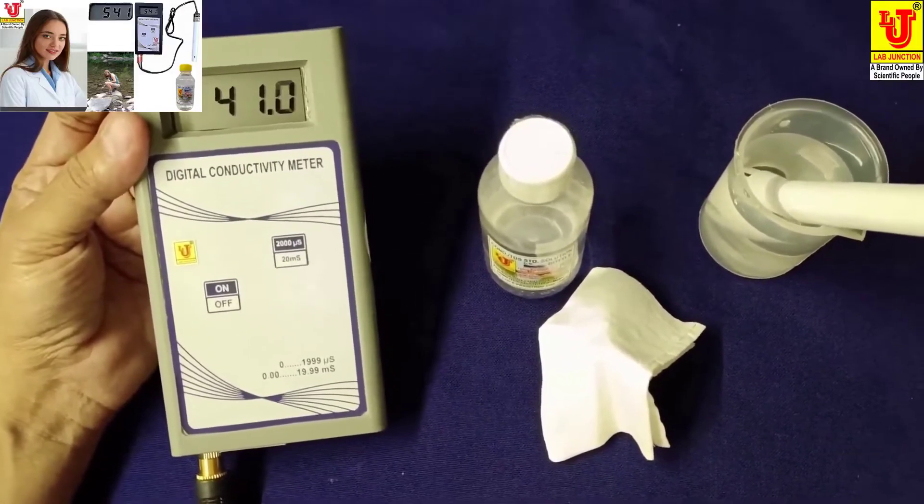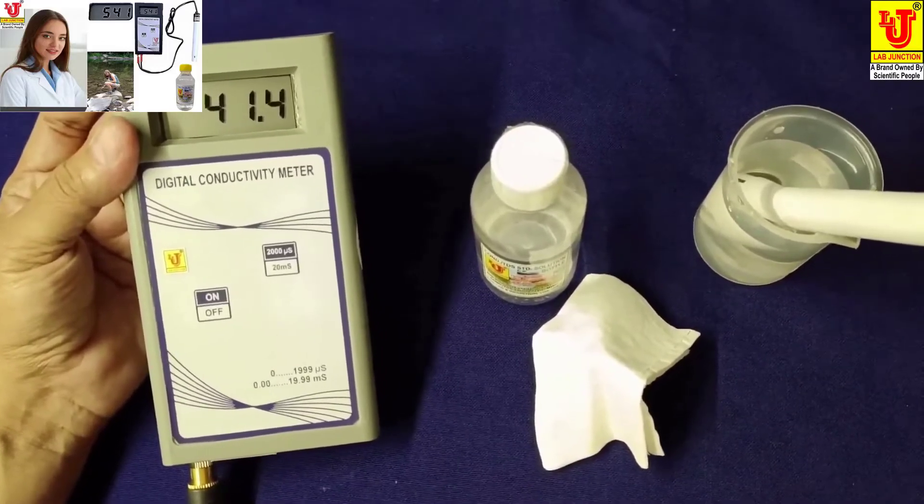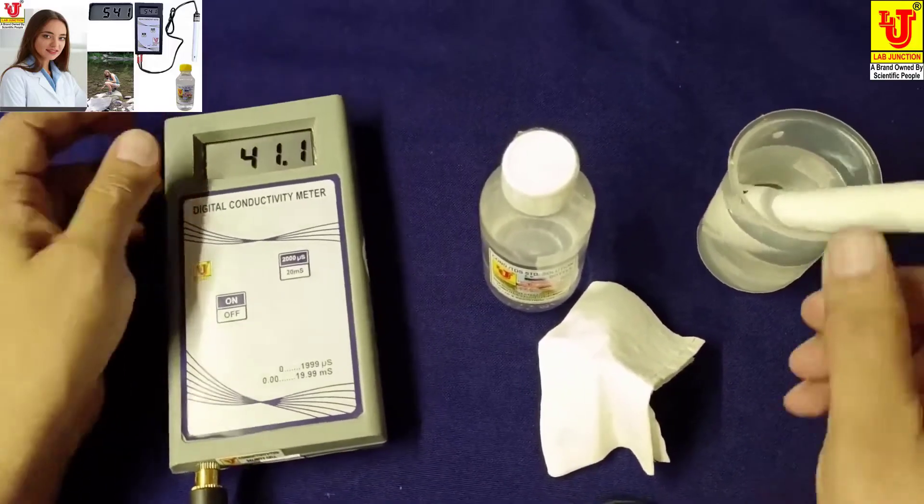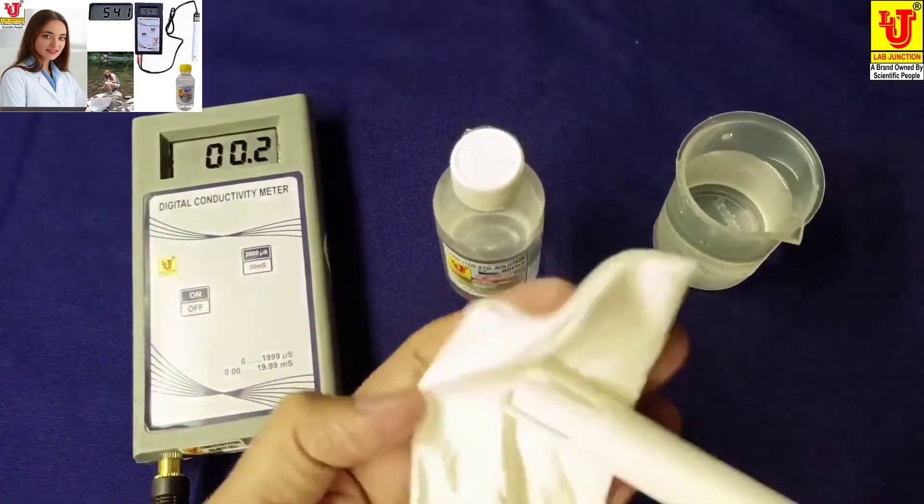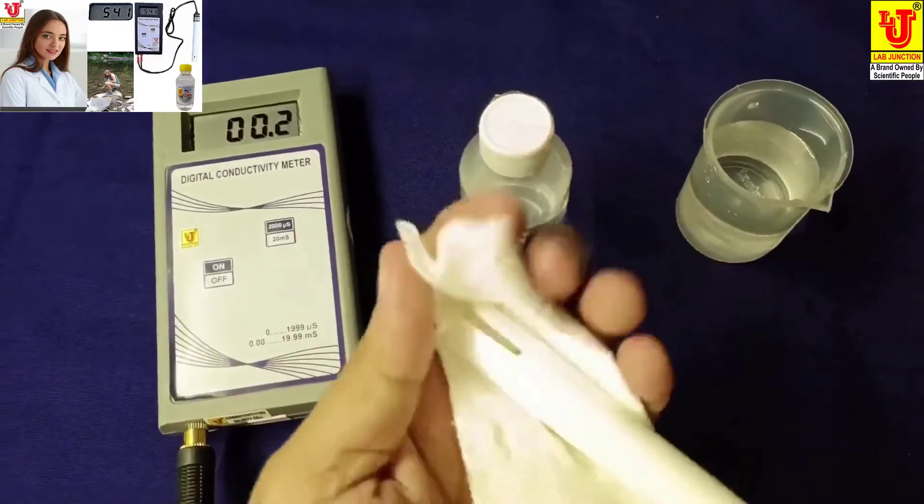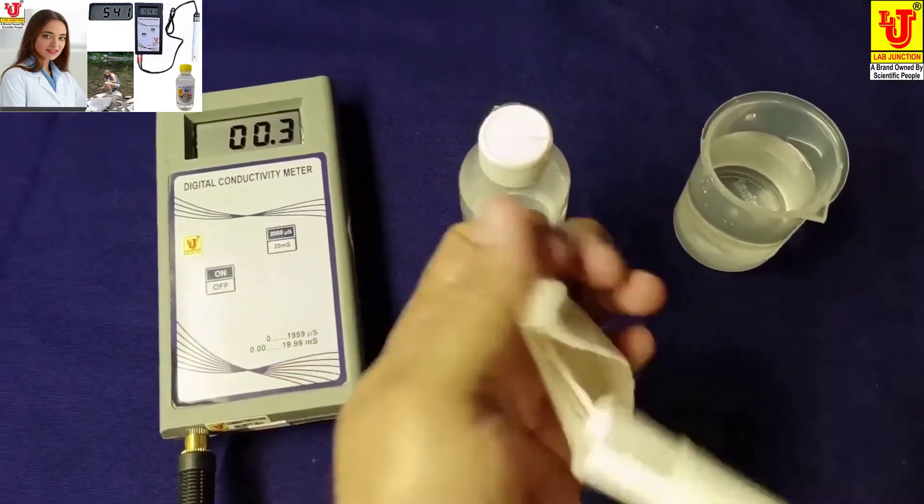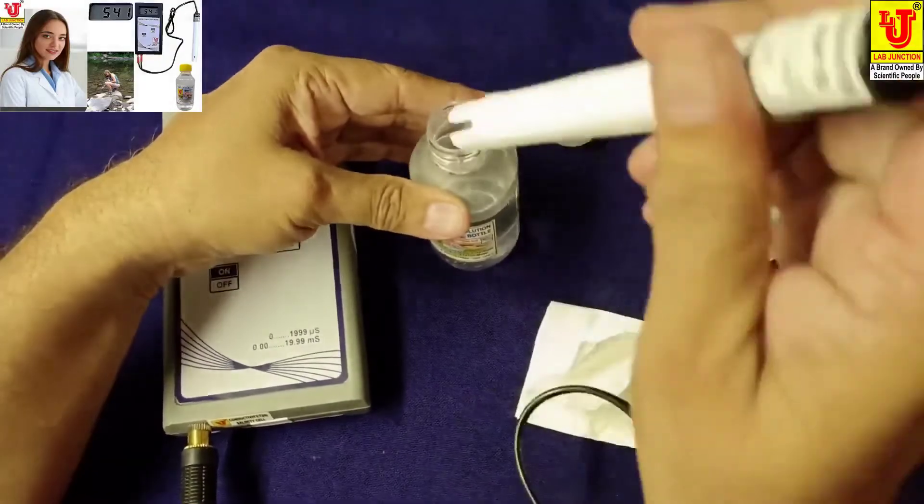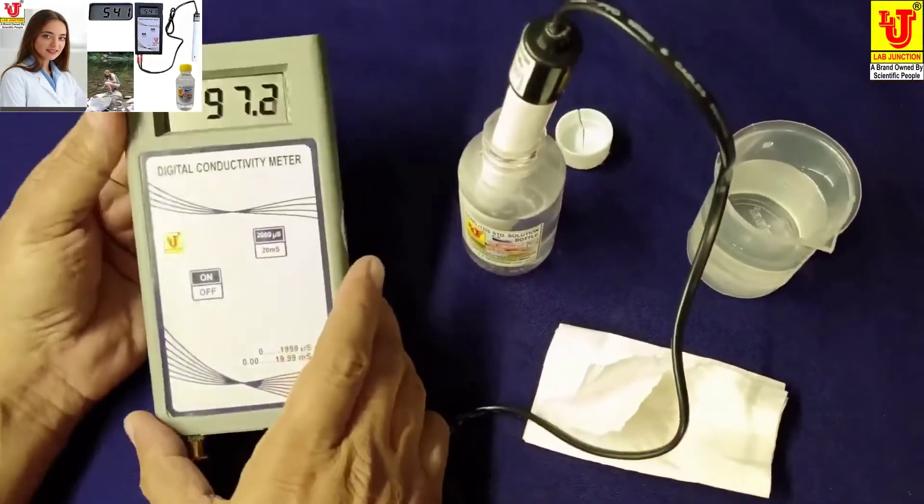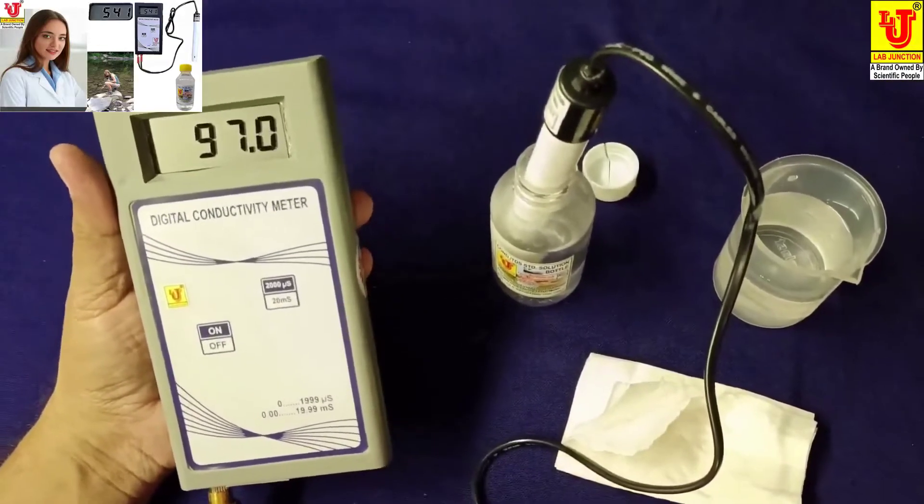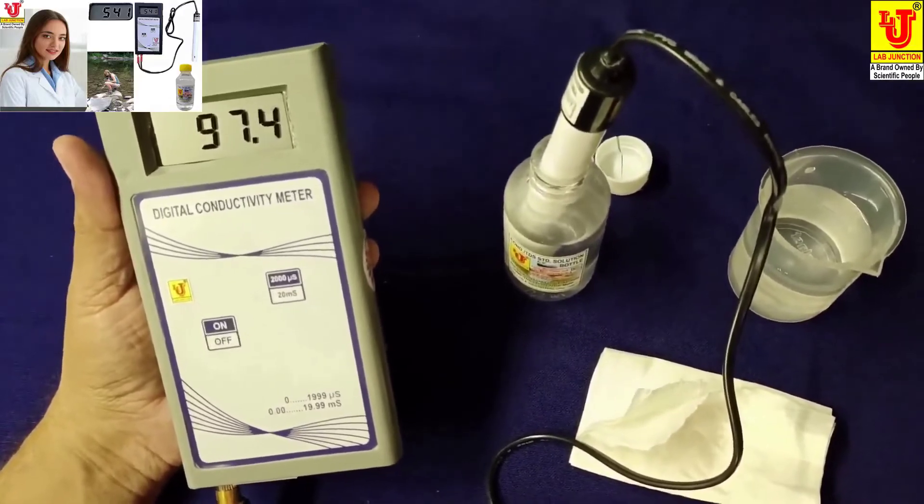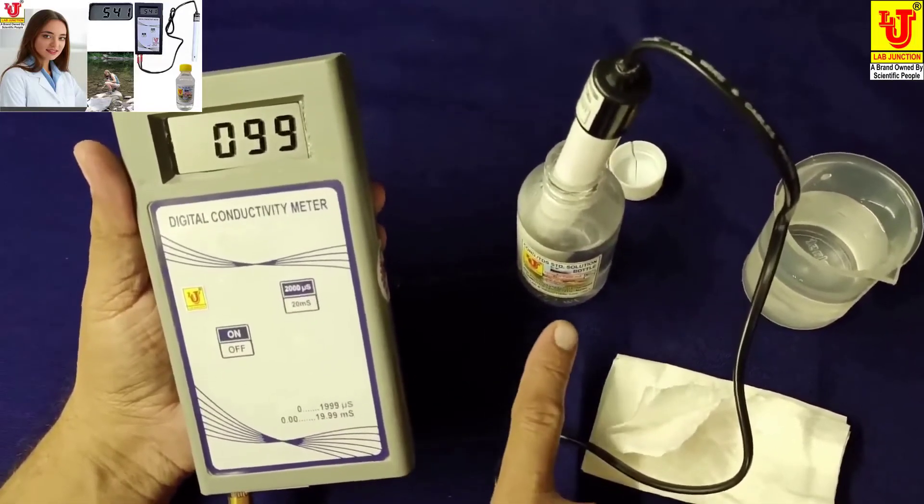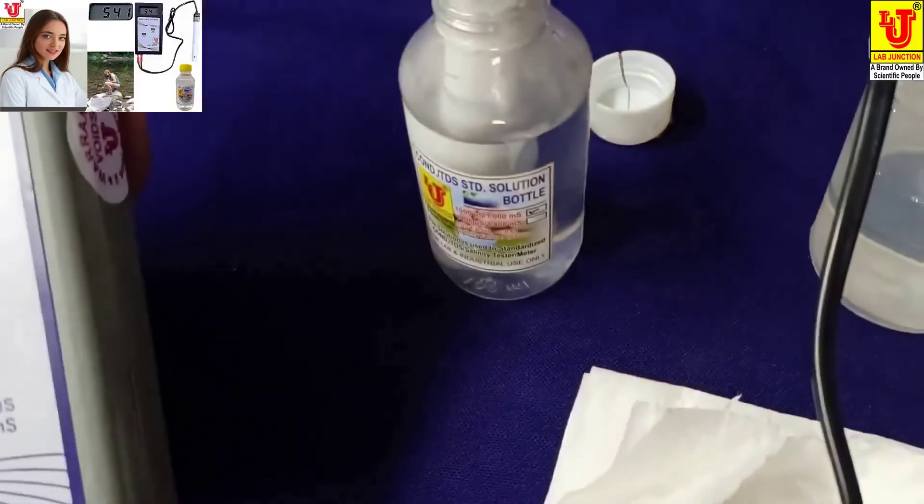Now if you want to calibrate with conductivity solution, then what you will do? Directly open the standard solution bottle, dip your electrode in the standard solution. Change the range to 20, now this is 1 millisiemens. Now this is already calibrated.